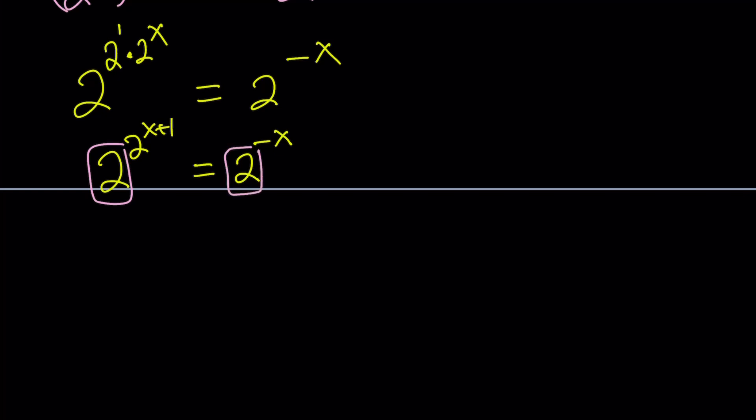Since we have the same base here, we can safely say that the exponents are equal. And since the bases are not 1 or negative 1, we're not going to worry about that. So we can from here write that 2 to the power x plus 1 equals negative x.